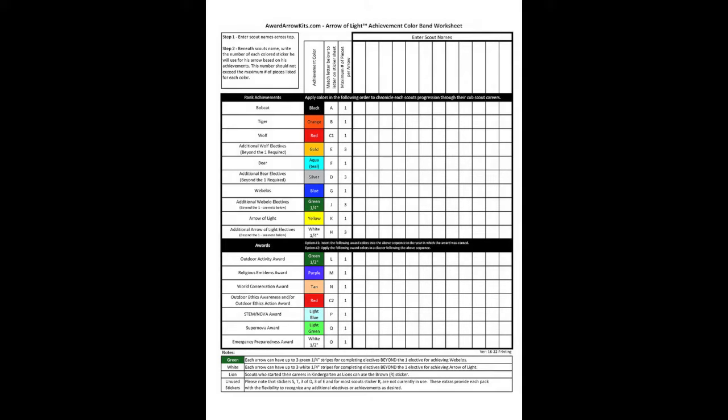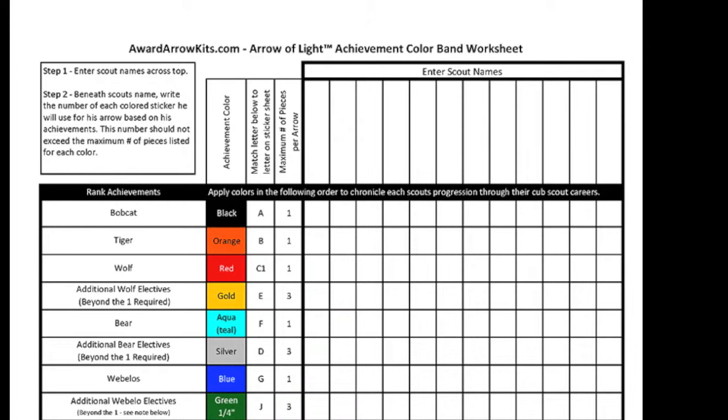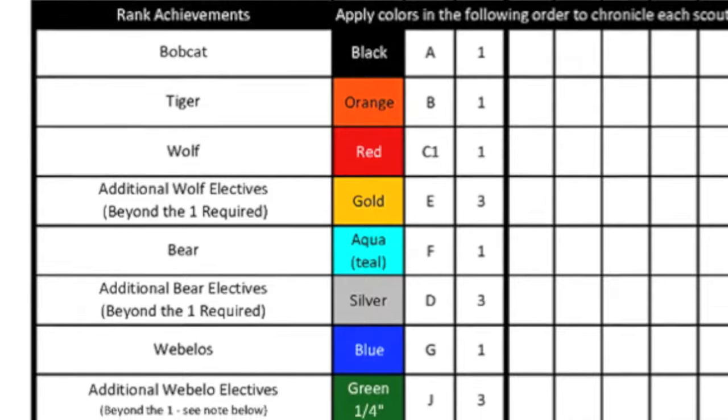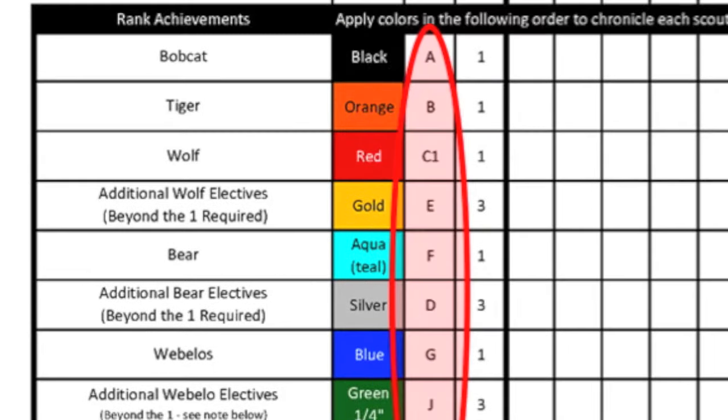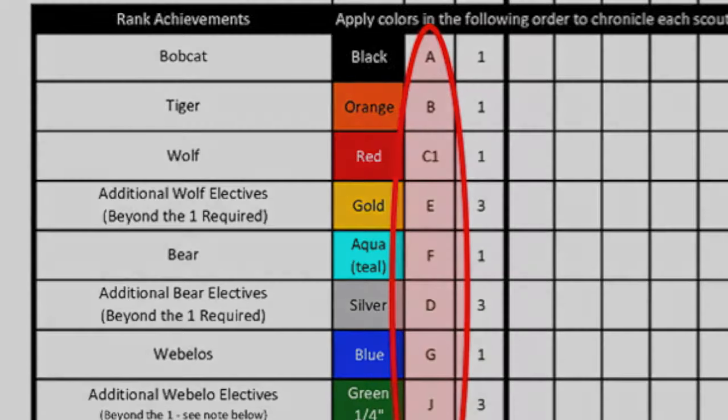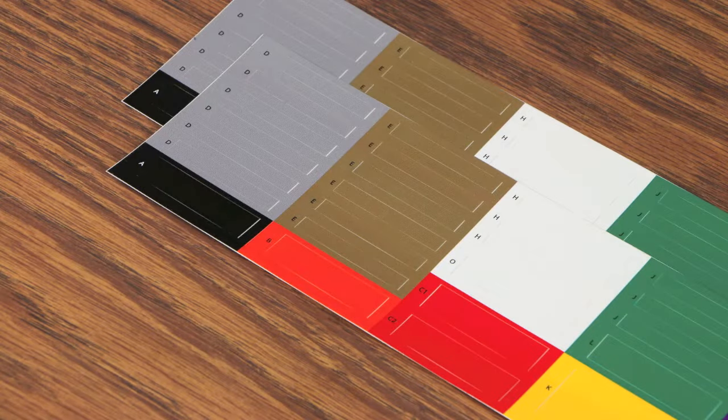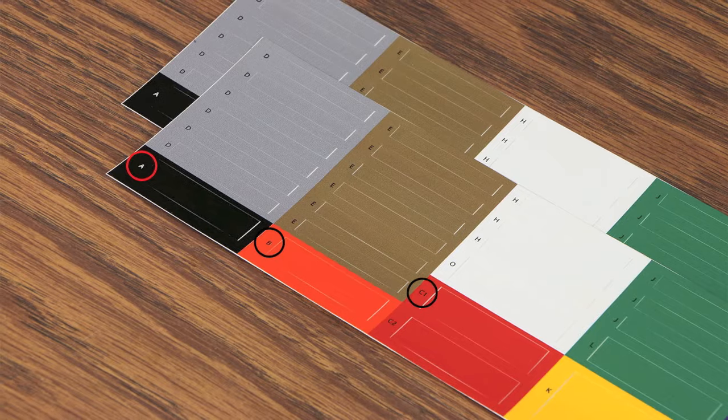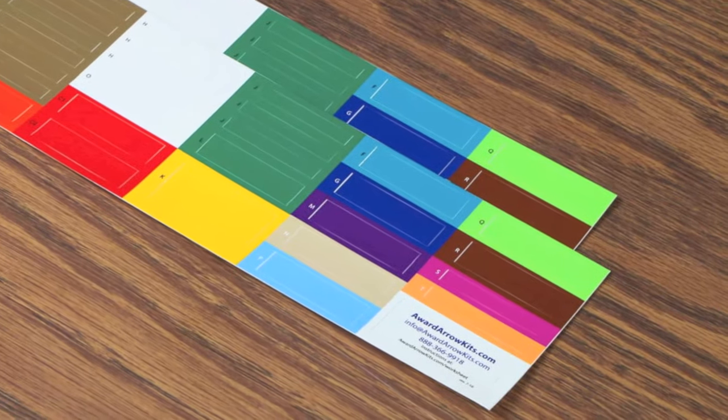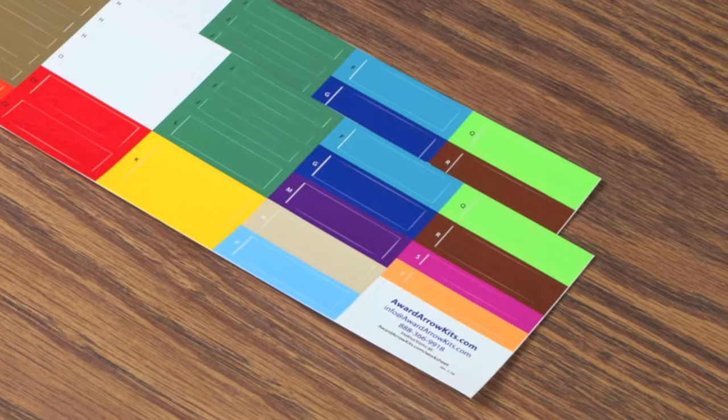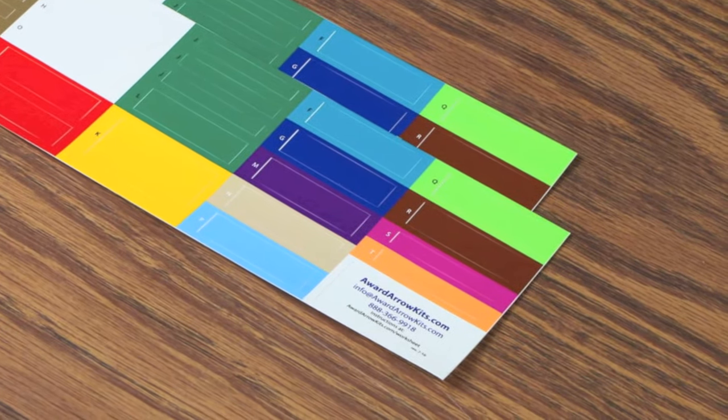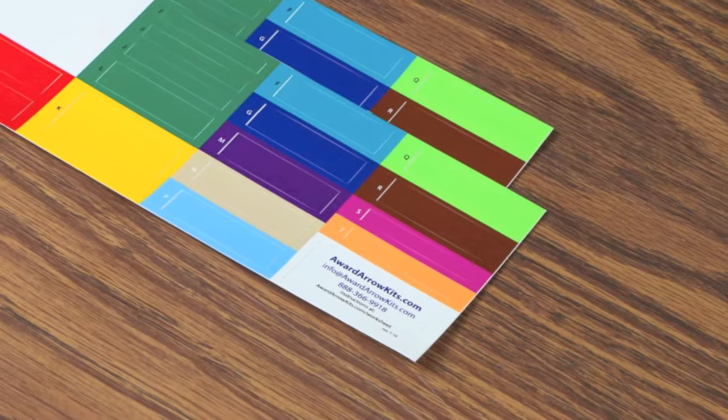The next step is to apply the rank and achievement color bands. On the back of the leader's guide, you'll find a worksheet where you can list the names of each scout across the top and use the grid below to identify the ranks and achievements for each individual. The ranks and achievements are identified by color and letter. These letters match the letters on the color band sheet. You'll find that there are a few extra unused colors on the right side of the sheet. Leaders can use these as desired to provide additional recognition to individual scouts.